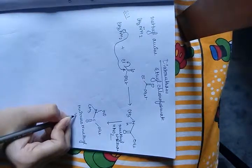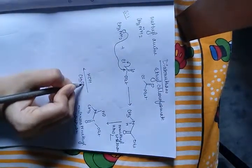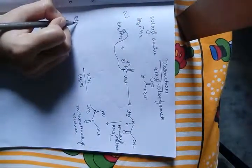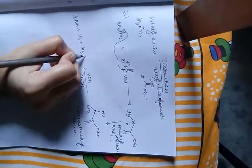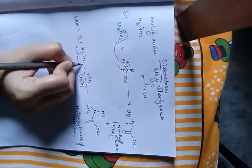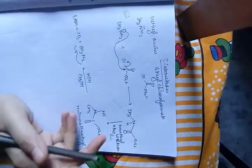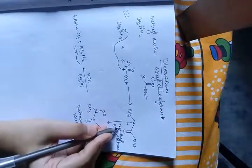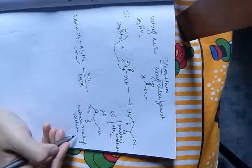So in step 1, N-methyl urethane forms. In step 2, N-nitroso-N-methyl urethane forms. And in the last step, step 3, we get diazomethane.